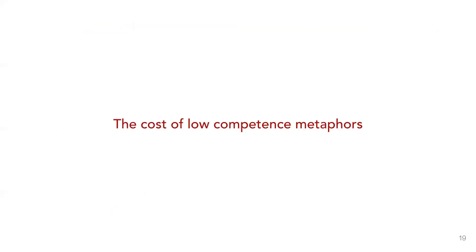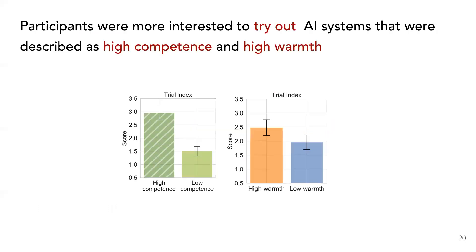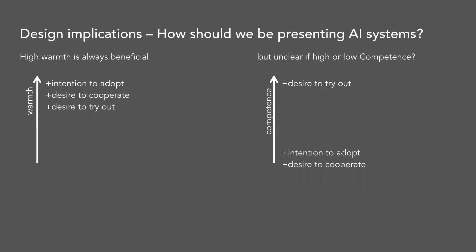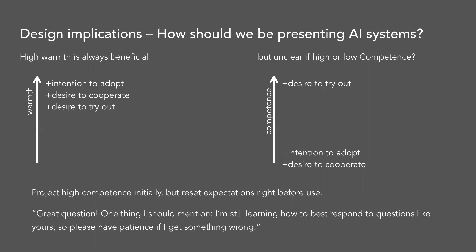While we've seen the benefits of projecting low competence, it is also possible that low competence metaphors can drive away potential users before they even try out the system. Through a survey, we found that participants were more likely to try out AI systems that were described as high competence and high warmth. So it becomes clear that associating a high warmth metaphor is always beneficial, but the choice of competence level becomes a more nuanced decision. One possible approach might be to choose a high competence metaphor, but to lower competence expectations right after interaction begins.